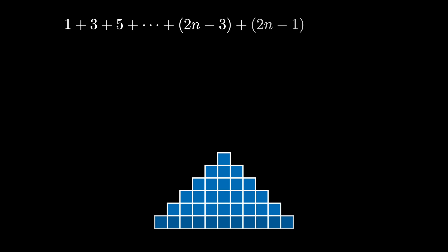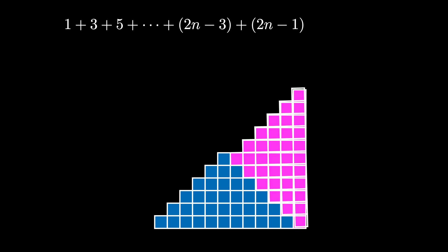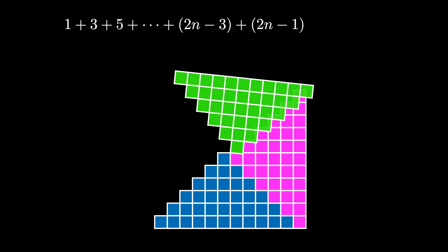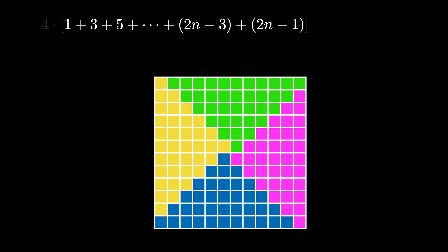The resulting stack is a representation of the sum of the first n odd numbers, but we can rotate this stack creating four total copies, and when we do that, the resulting shape is a perfect square.